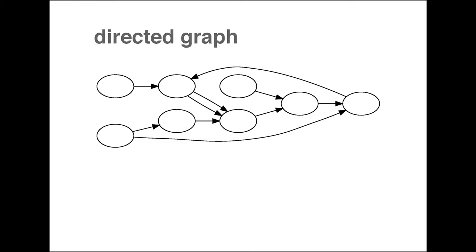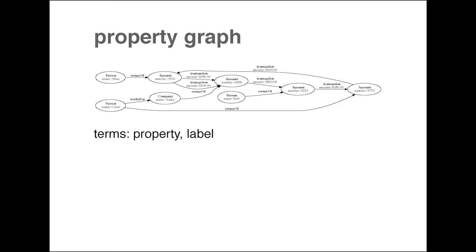This is a directed graph - every edge has a direction. In graph databases, that's more or less implicit, so it doesn't have to be mentioned explicitly. Note that in a graph database, you can have multiple edges between the same nodes. That's maybe not always the case in certain mathematical models, but in data representation it's entirely permissible. This is a graph with some data on it - it's a little tiny to read all the details, but there's a person with a name, and an account with a number.